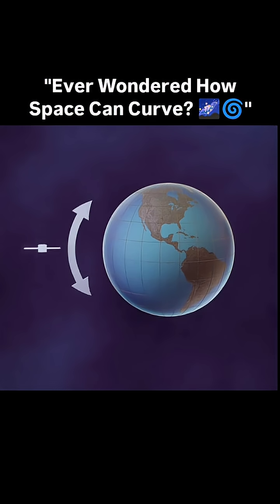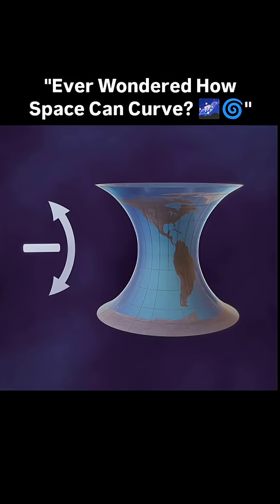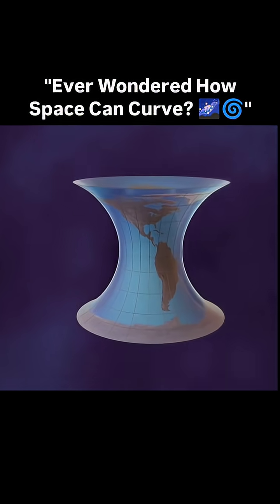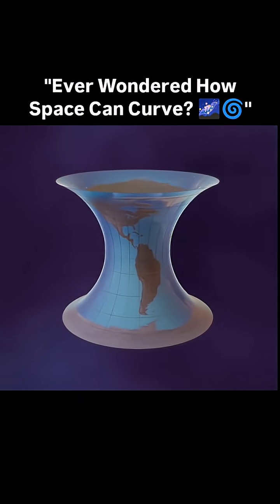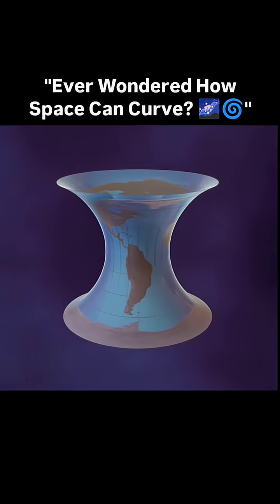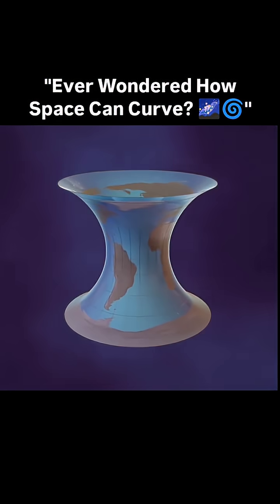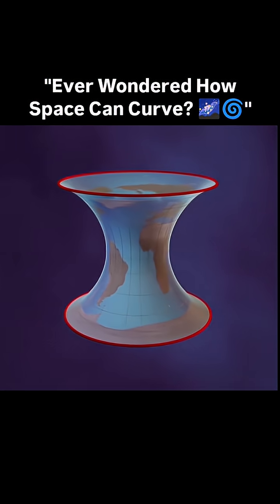But we could also have space with a negative curvature that would cause parallel lines to splay further and further apart. Take, for instance, a hyperbolic surface. If the Earth's surface were hyperbolic, the north and south poles wouldn't be single points, but would be rings that spread out wider than the equator.